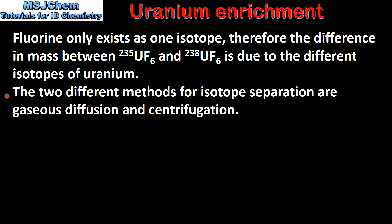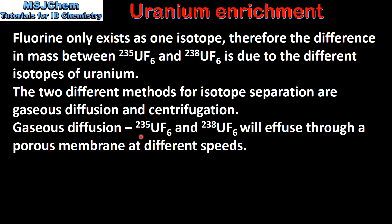The two different methods for isotope separation are gaseous diffusion and centrifugation. In gaseous diffusion, uranium-235 hexafluoride and uranium-238 hexafluoride will effuse through a porous membrane at different speeds. This is due to Graham's law of effusion, which we looked at in the previous video. The isotope with a higher molar mass will effuse at a slower rate than the isotope with a lower molar mass.